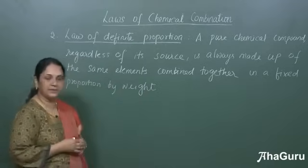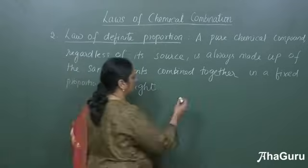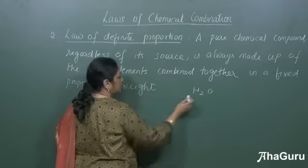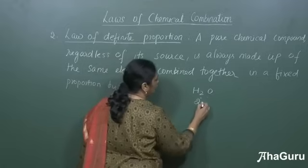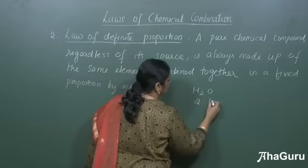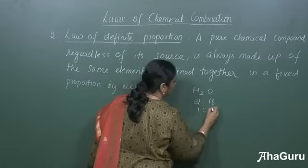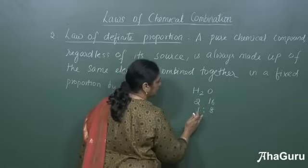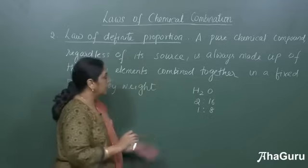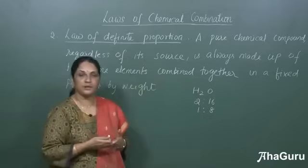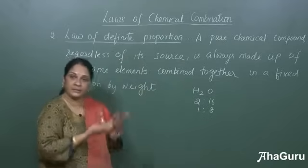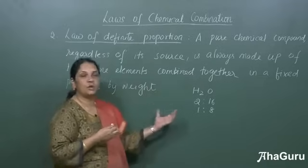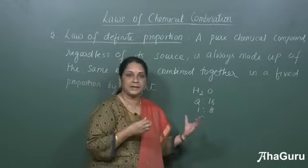Let me explain this law. Suppose I take water — H₂O. What is the ratio of the masses? Hydrogen 2 is to oxygen 16, or 1 is to 8. In water, hydrogen and oxygen are in the ratio 1 is to 8. This water may be from the river, seawater, or tap water — regardless of its source, the composition always remains the same.